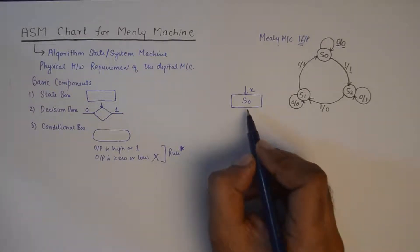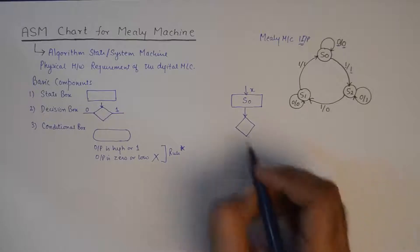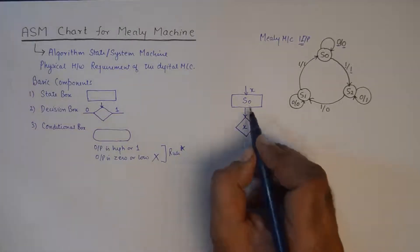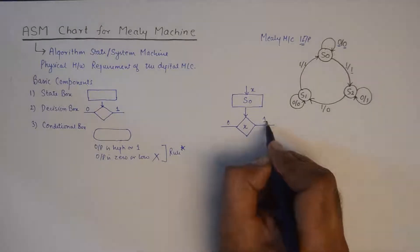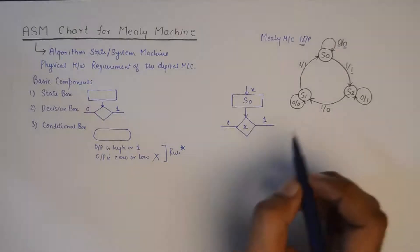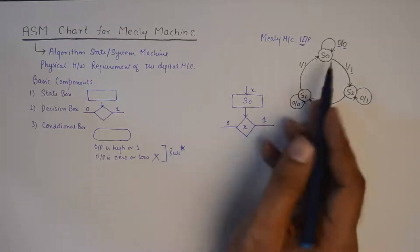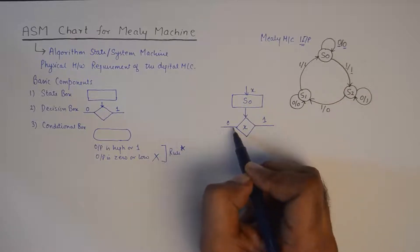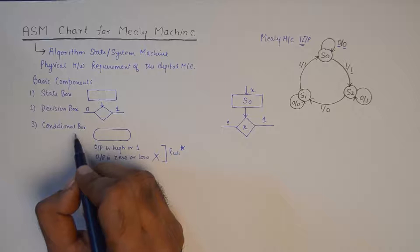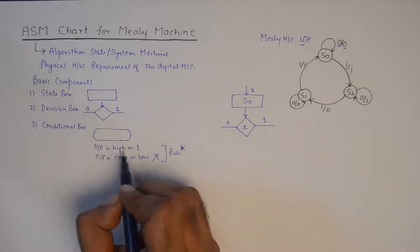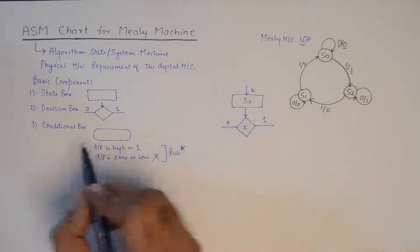While we stay at S0 we have two options, represented using a decision box. While at state S0 we could encounter an input 0 or a 1. We see that when the input is 0, the state does not change so we remain at state S0. We need to keep in mind the conditional box rule — when the output is high we draw it, and when the output is 0 we do not. In this case the output is 0, so we do not need to draw the conditional box.